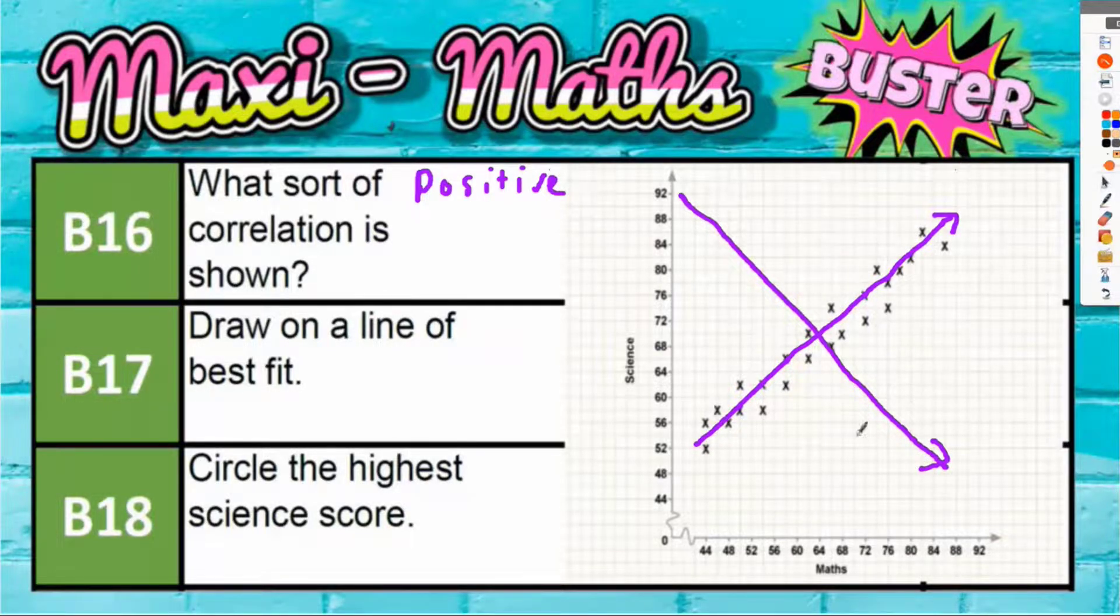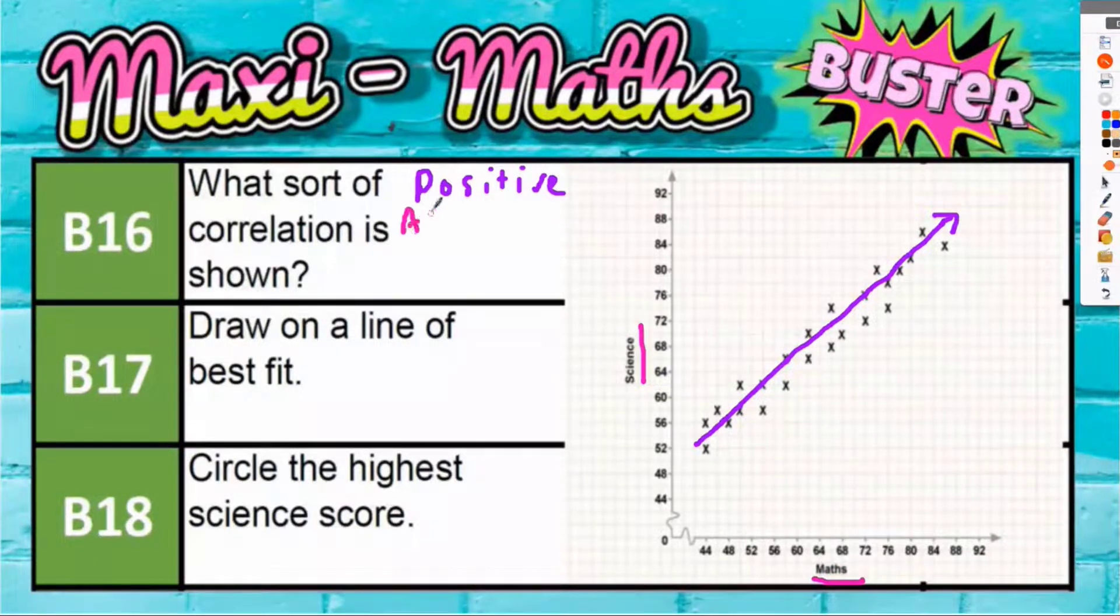They're going upwards, not downwards. That's positive correlation. Positive correlation generally means that the two sets of data are moving in the same direction. So we're talking about math scores and science scores upwards, so in other words, as math scores increase, the science scores are going in the same direction.